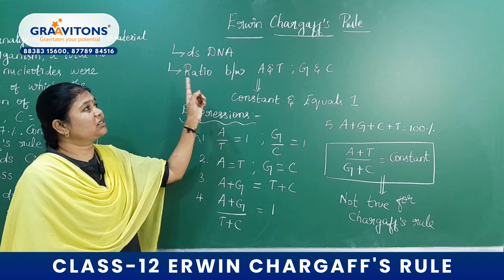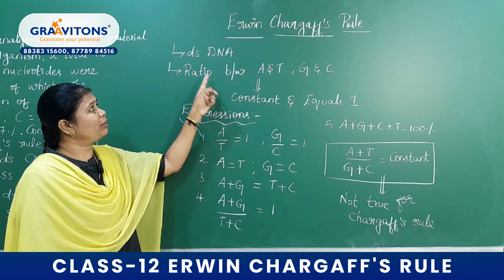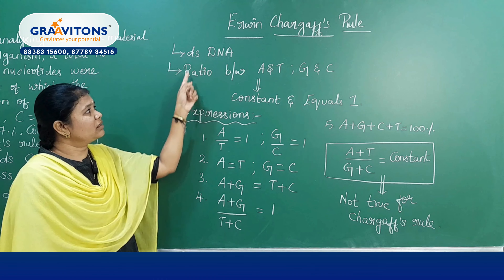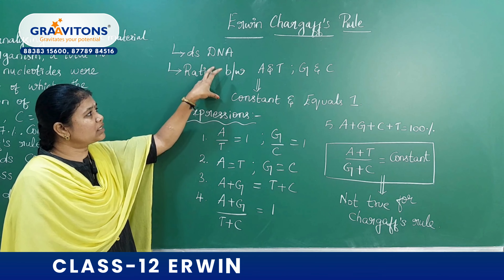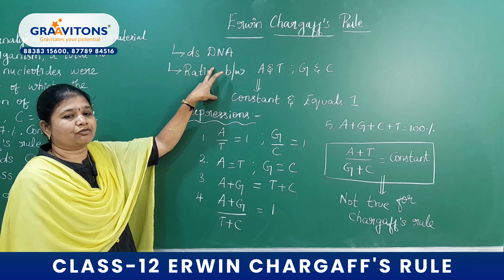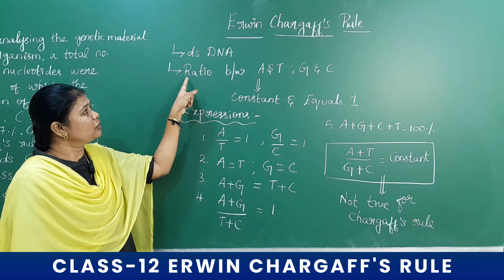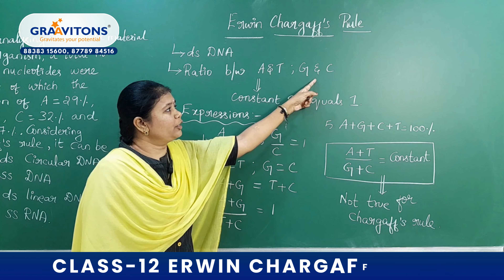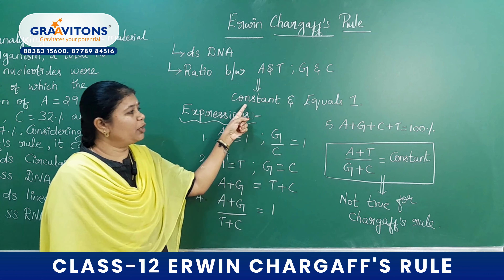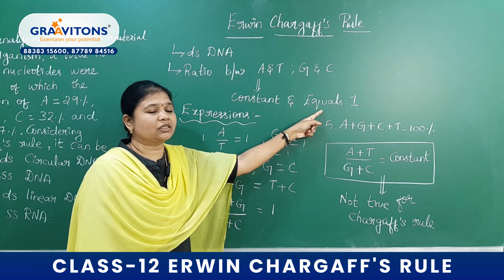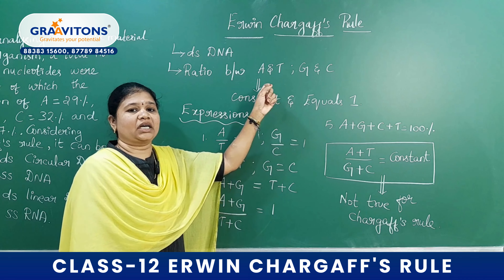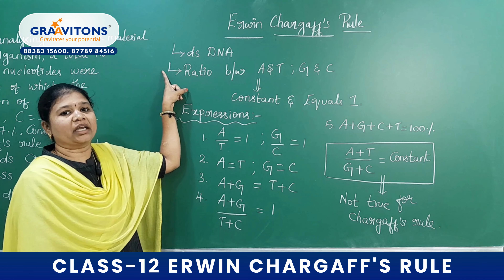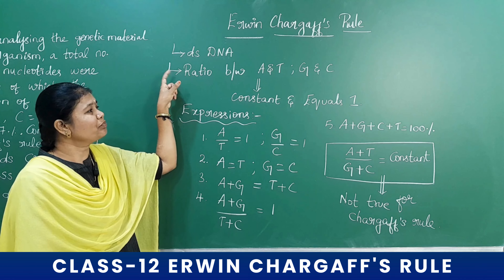First of all, Chargaff's rule will be applicable for a double-stranded DNA. The statement of Chargaff's rules is: the ratio between Adenine and Thymine, and Guanine and Cytosine, will always be constant and equal to 1. So if at all we are asked to state Chargaff's rule, this is what you are expected to write.